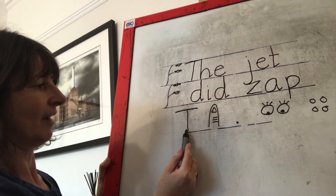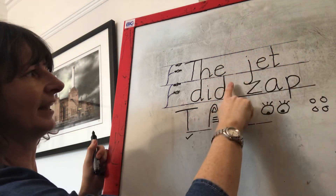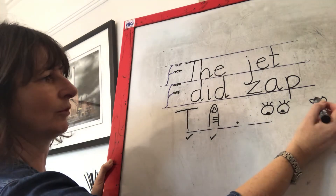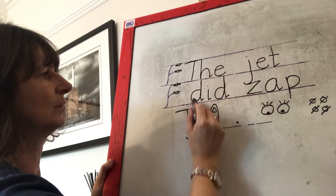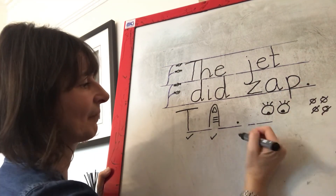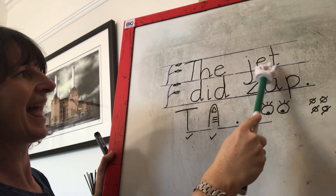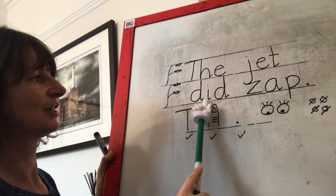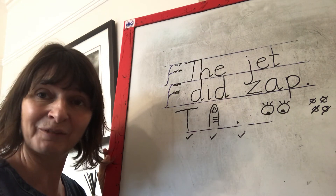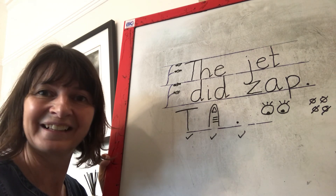Now let me see. I've got my capital letter — tick. I've got all my finger spaces — tick. Have I finished my sentence? How many words did I need? One, two, three, four. So I haven't got my full stop yet. And now I need to read my sentence back: The — J-e-t — jet — D-i-d — did — Z-a-p — zap. Did you get the same sentence as me? You are a clever bunch, aren't you? Well done, everybody. I hope the rest of your day's fantastic. See you soon. Bye.